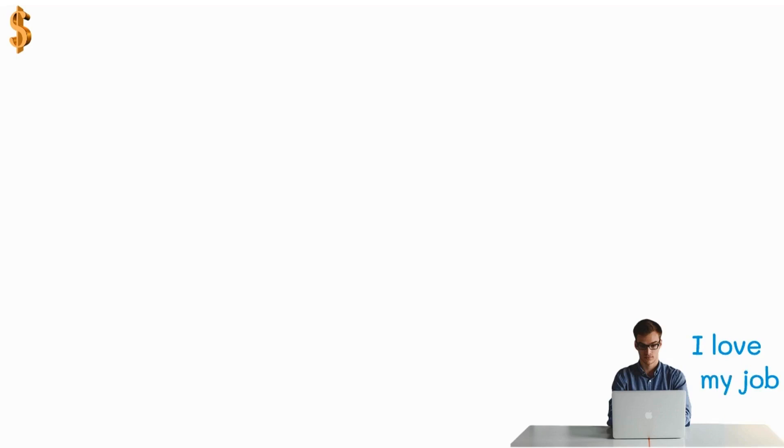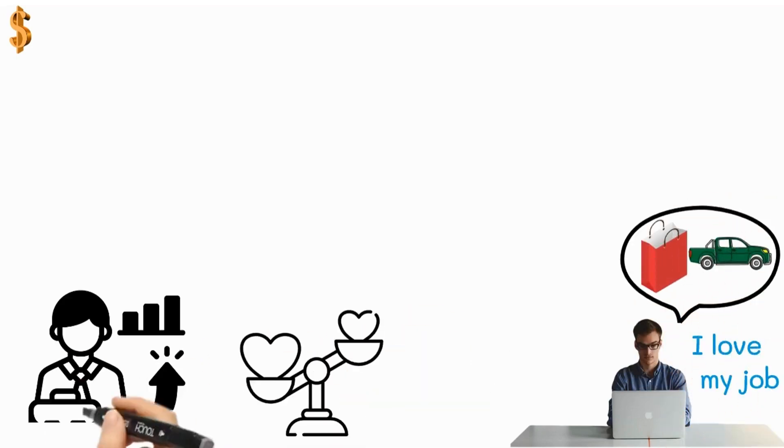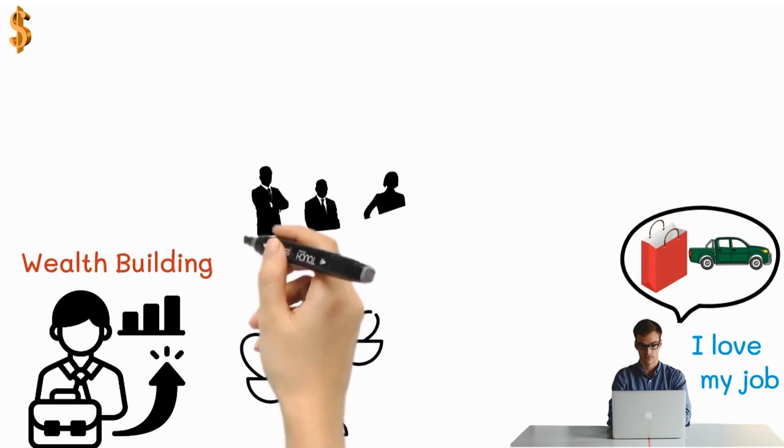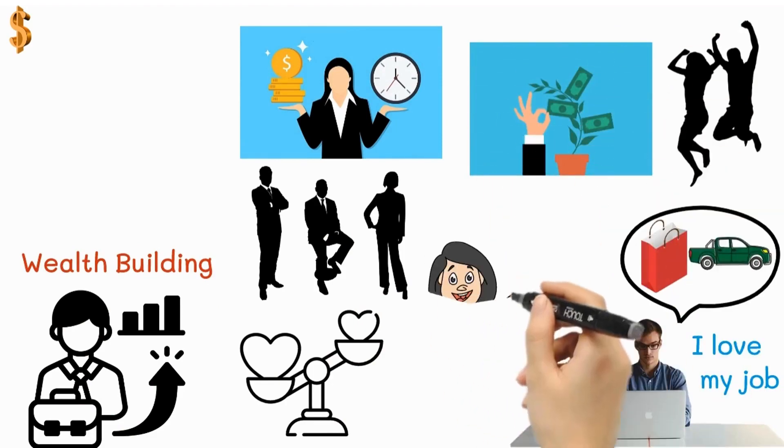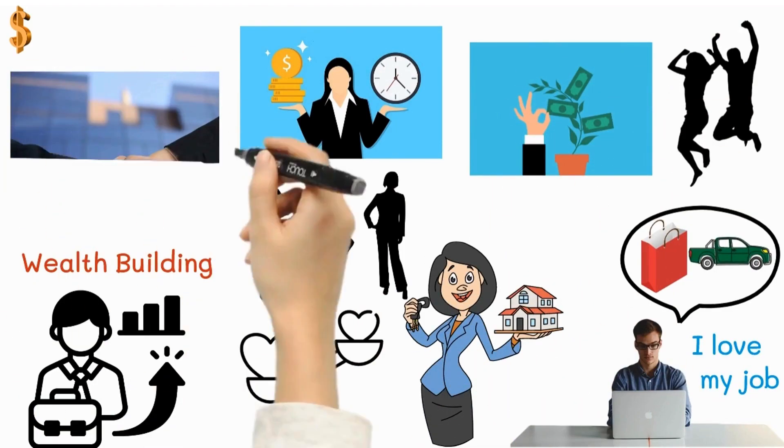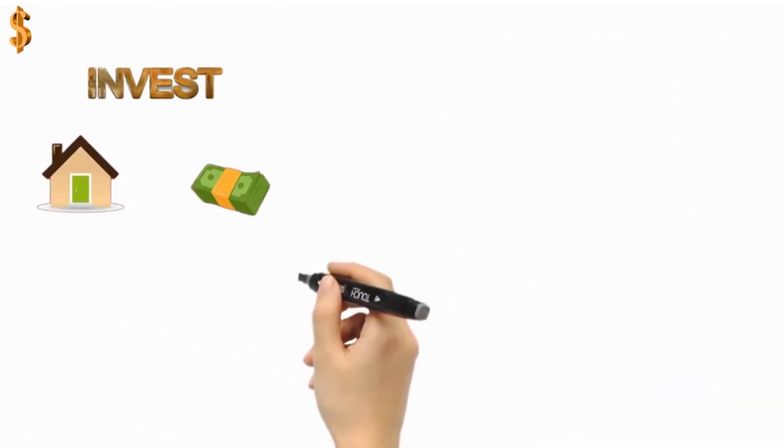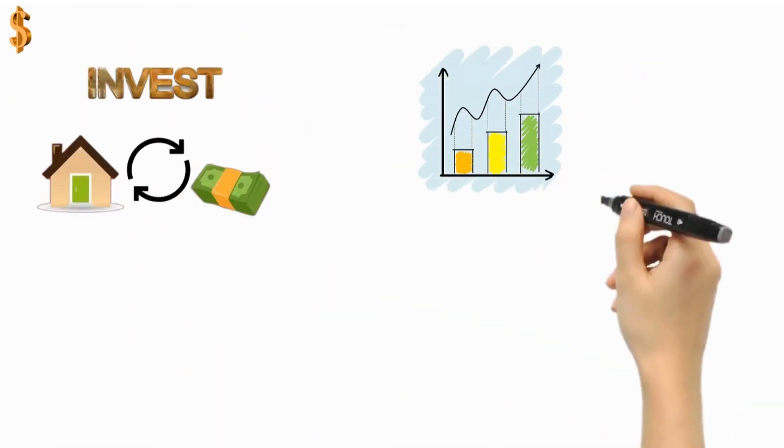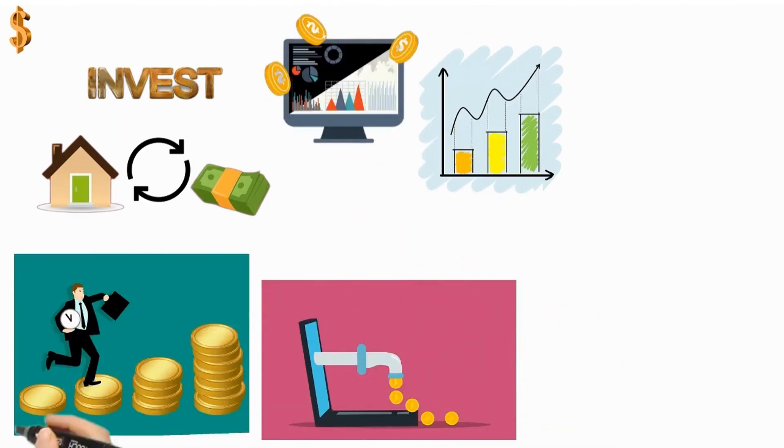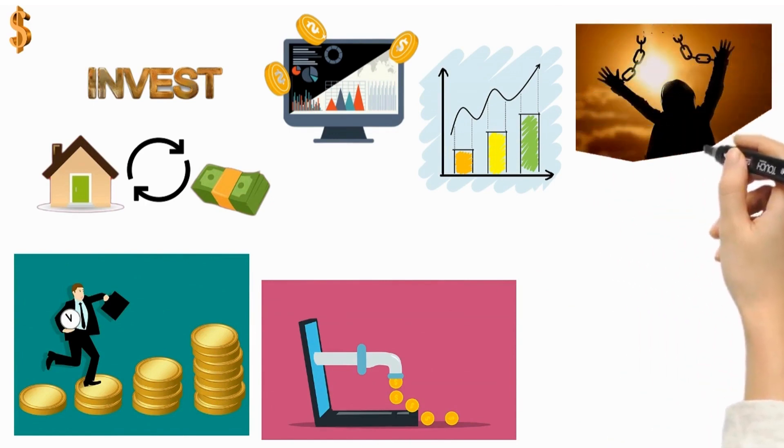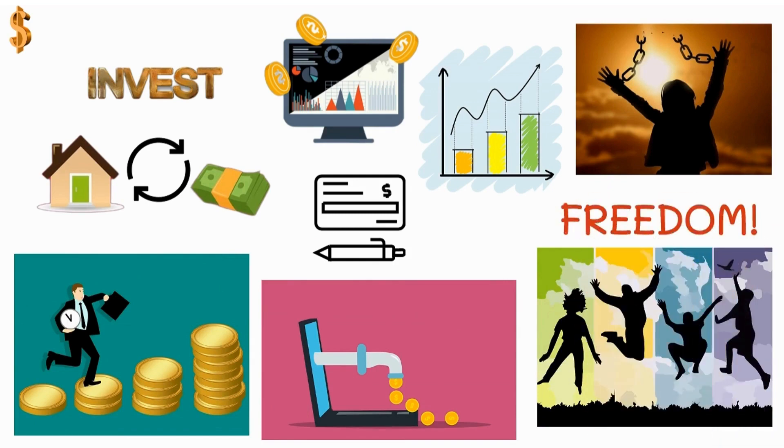Kiyosaki argues that while pursuing a passion is admirable, it's essential to strike a balance with building wealth. The wealthiest individuals don't solely rely on their income from their jobs. They actively acquire assets that generate passive income, such as real estate, businesses, and investments. By focusing on acquiring assets, young people can create a stream of income that flows independently of their jobs. This financial leverage allows them to break free from the traditional paycheck-to-paycheck cycle and achieve true financial freedom.